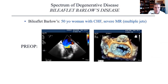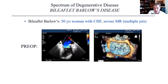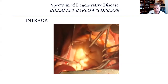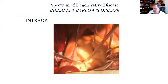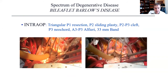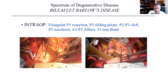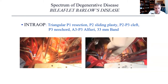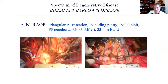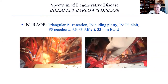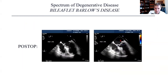Here's a 50-year-old woman with congestive heart failure, severe mitral regurgitation with multiple jets. Intraoperatively, essentially all segments of both posterior and anterior leaflets were billowing. We took it one step at a time — one lesion, one technique. We did a triangular P1 resection, a P2 sliding plasty, closed the P2-P3 cleft, placed a P3 neocord, did an A3P3 Alfieri stitch, and put on a 33-millimeter band. We were able to repair that valve in this complex setting with a good result.